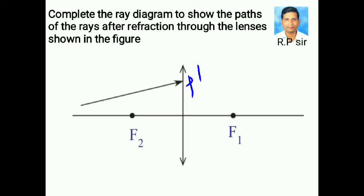Now, complete the ray diagram to show the paths of the rays after refraction through the lenses shown in figure. So, this is the convex lens and this is the incident ray. Ok, first,